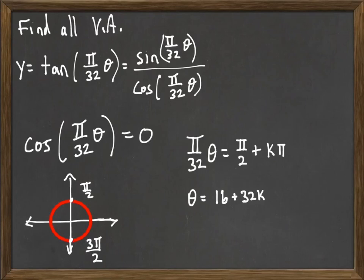So the values for θ that will lead to vertical asymptotes are anything of the form 16 plus a multiple of 32. So that would be like 16, 48, or 16 minus 32 would be negative 16. 16 minus 32 times negative 2 would be negative 48, and so on. And those are all of our places where we're going to have vertical asymptotes for this trig function.